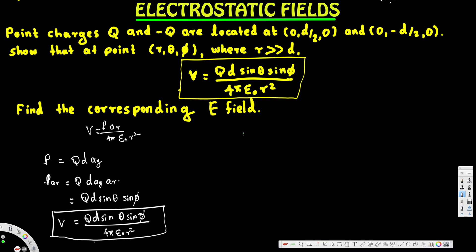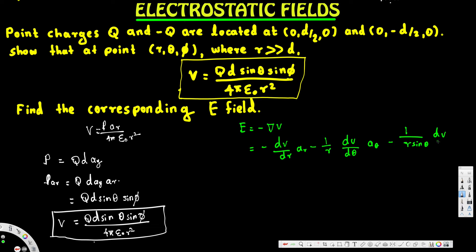For the second part, we need to find the electric field. We know E = -∇V. Since we have V, we can find it easily. In spherical coordinates, -∇V gives us: negative ∂V/∂r·a_r, minus (1/r)·∂V/∂θ·a_θ, minus (1/r·sinθ)·∂V/∂φ·a_φ. We apply this now by plugging in our V.